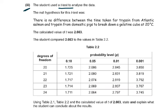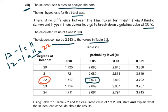Moving to part 3: the student used a t-test to analyze the data. The null hypothesis was: there is no difference between the time taken for trypsin from Atlantic salmon and trypsin from domestic pigs to break down a gelatin cube at 20 degrees Celsius. The calculated t-value was 2.663. For degrees of freedom in a t-test requiring two means, we had 12 readings for each group — subtract 1 from each, giving 11 + 11 = 22 degrees of freedom. The critical value at 22 degrees of freedom and probability 0.05 is 2.074.